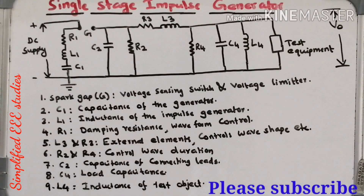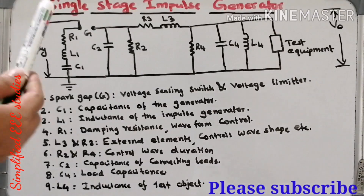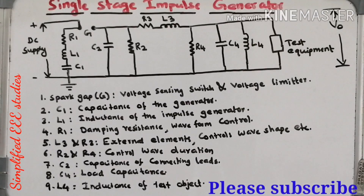Hello everyone. In the last session, I explained what is an impulse generator. There are two types of impulse generator: impulse voltage generator and impulse current generator. Moreover, impulse voltage generator can be divided into two categories: single stage impulse generator and multi-stage impulse generator. In this session, I will be explaining the importance of single stage impulse generator and evaluating its performance parameters.